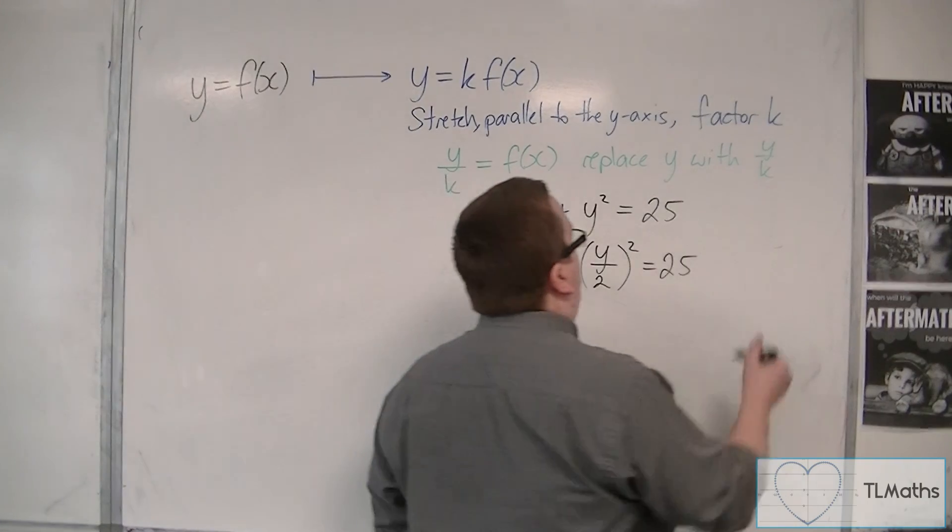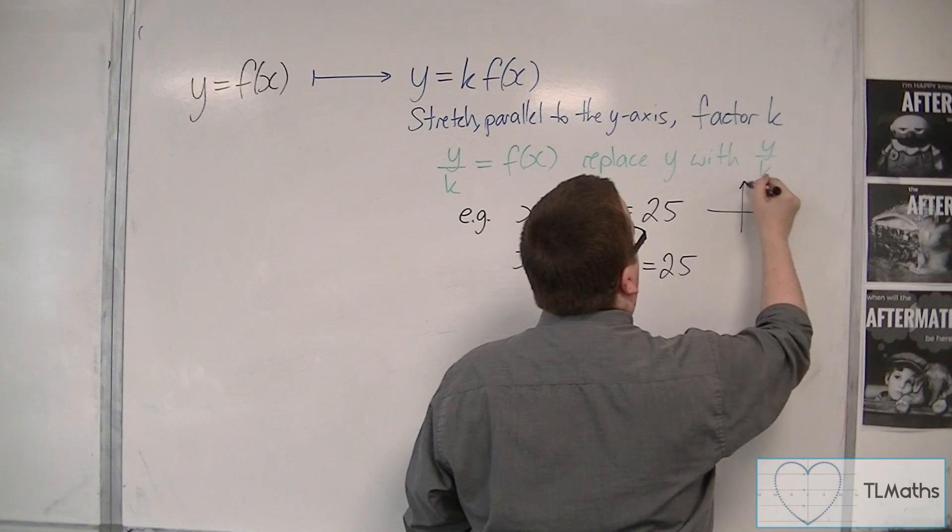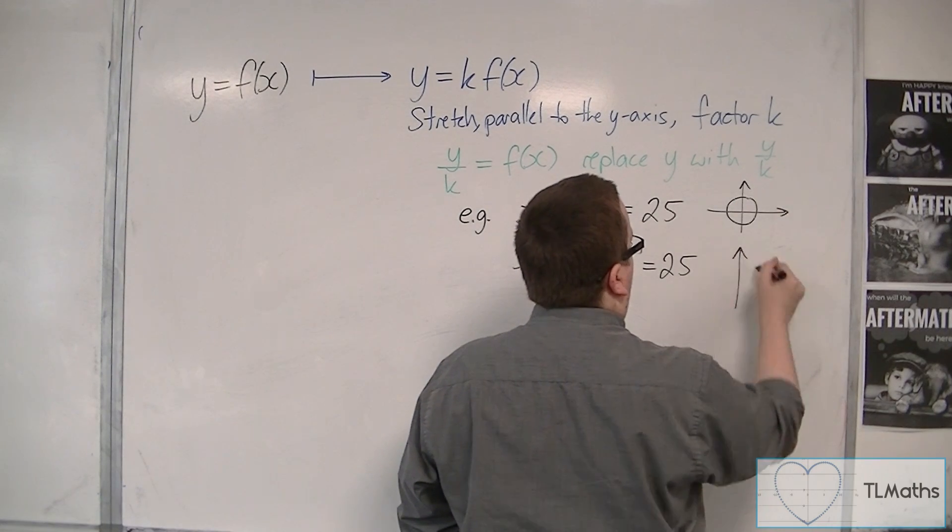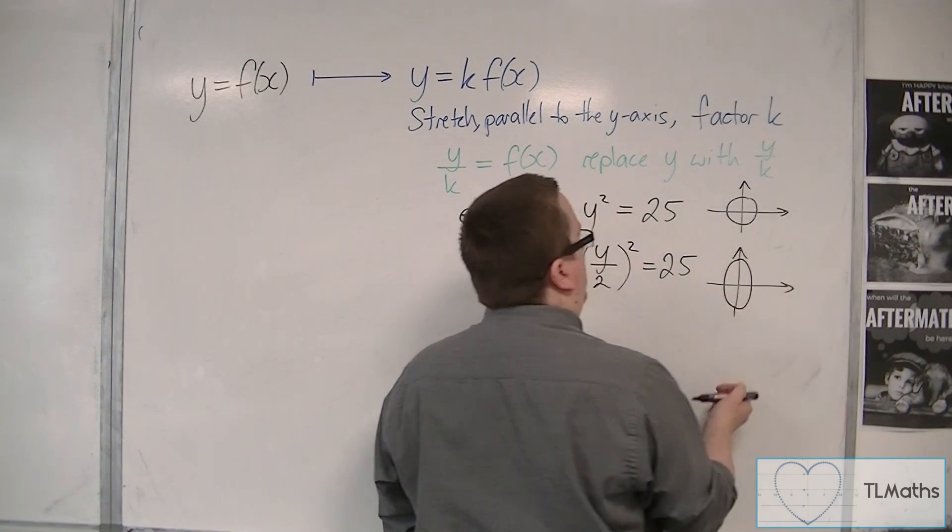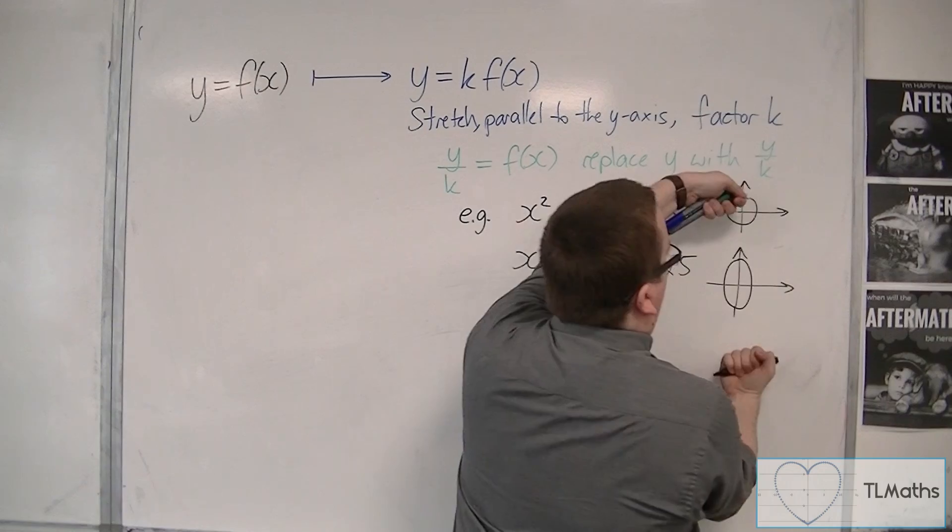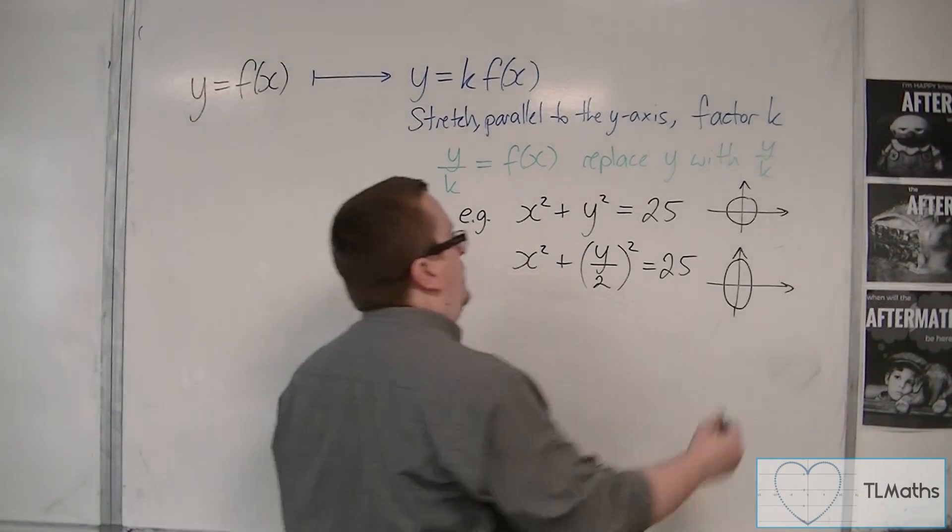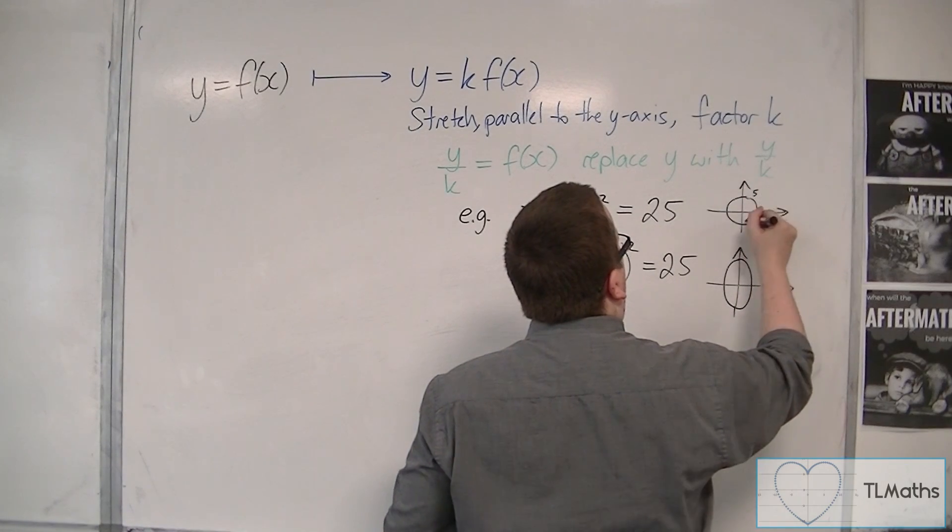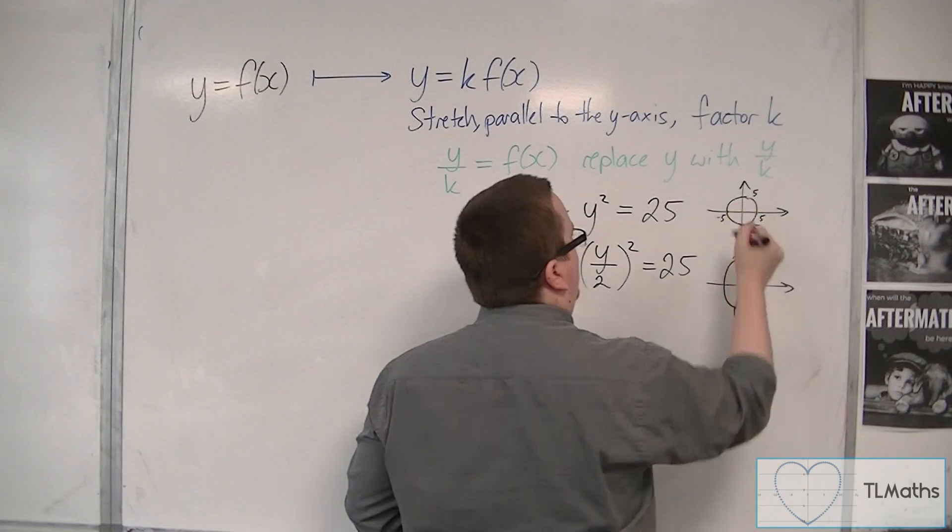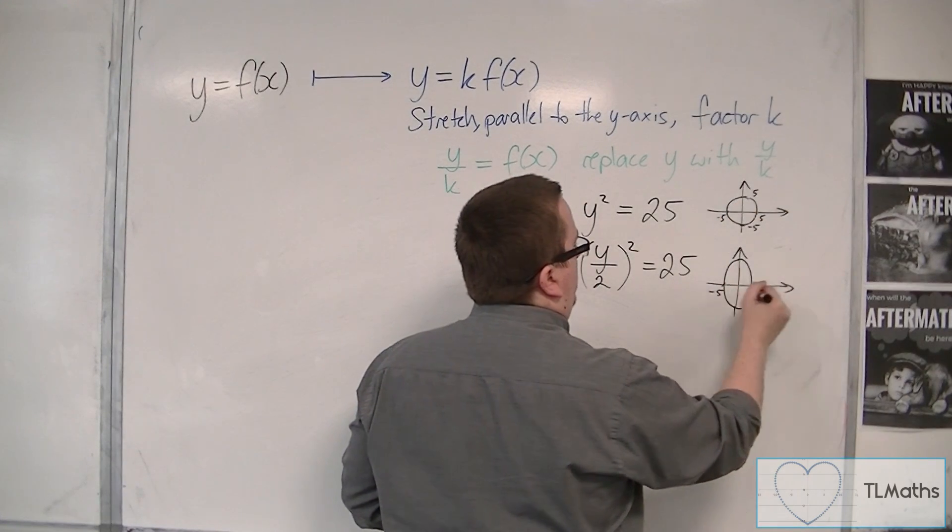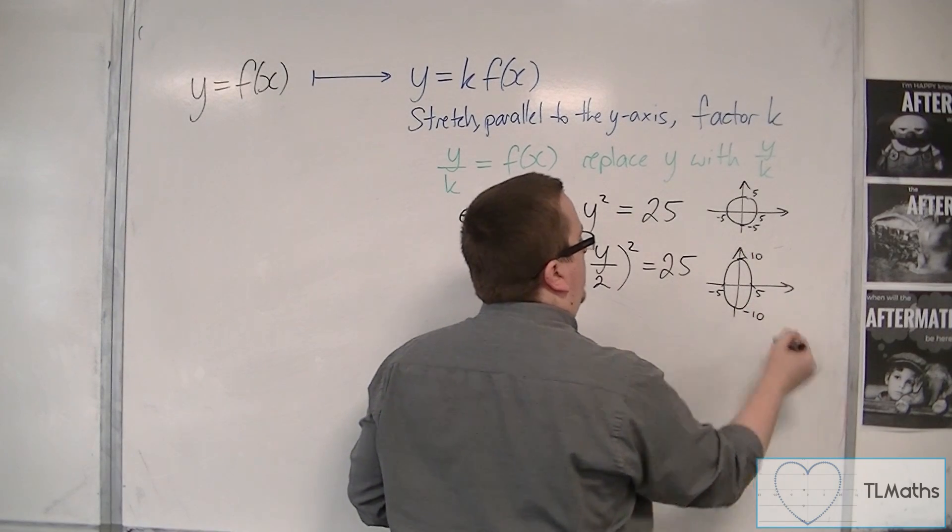What's happened is that this circle that once looked like this, now, after the transformation, will look like this. Because the circle has been stretched by factor 2 in the y direction. So rather than going through 5 and minus 5 on the y-axis, 5 and minus 5 on the x-axis, you're still going through minus 5 and 5 on the x-axis, but now going through 10 and minus 10 on the y-axis.